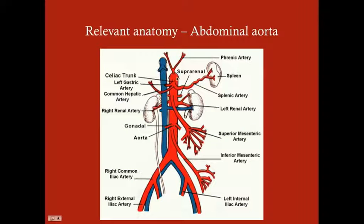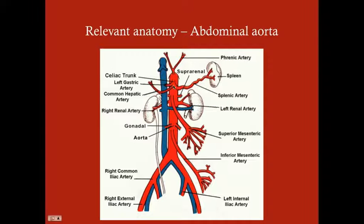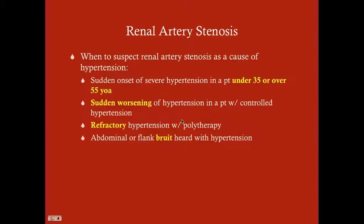Here's some relevant anatomy: the abdominal aorta gives off many vessels, many of which are important when talking about peripheral artery disease and atherosclerosis. There's the celiac trunk and the superior and inferior mesenteric arteries, which are important when thinking of ischemia to the bowel, and then the left and right renal arteries. The abdominal aorta is usually described as supraceliac — above the celiac trunk — and infraceliac — below it.